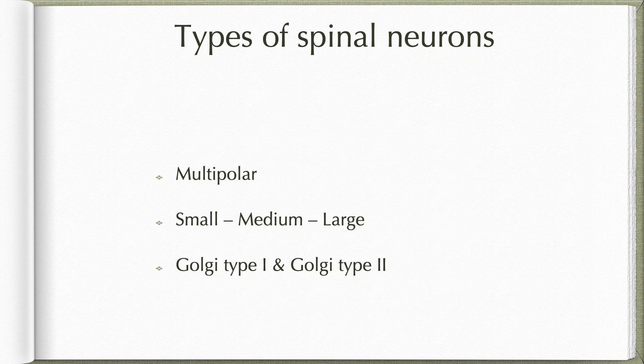The grey matter of spinal cord is made up of multipolar neurons; however, their size varies. The smallest neurons are propriospinal. Their fibers span the same segment or at best adjacent segments. They are involved in reflex activity or they form the interneurons connecting the descending fibers with the motor neurons.